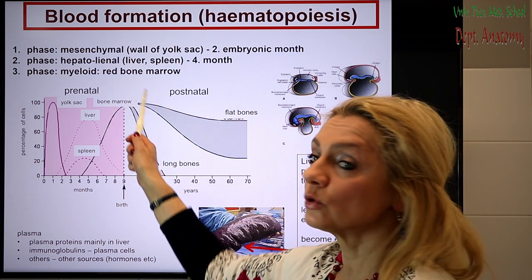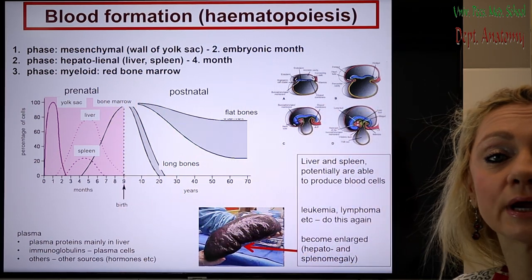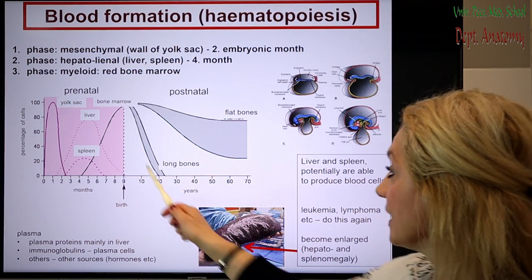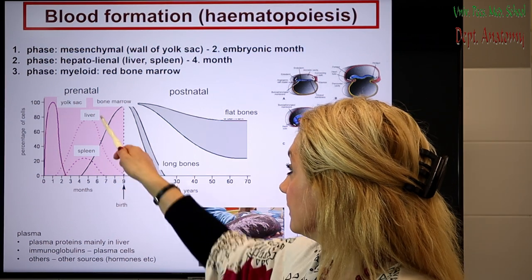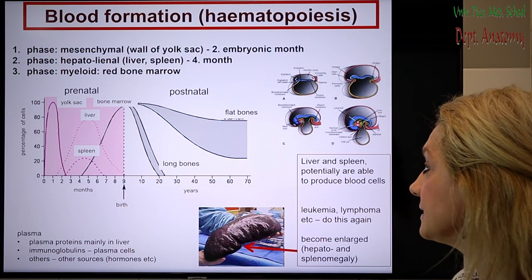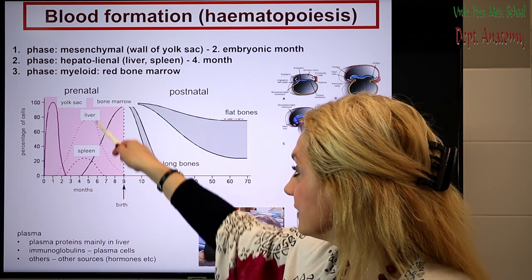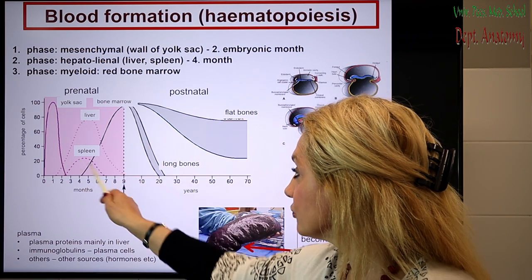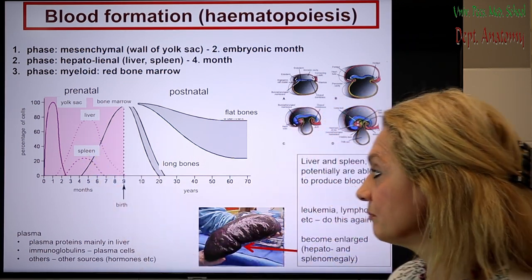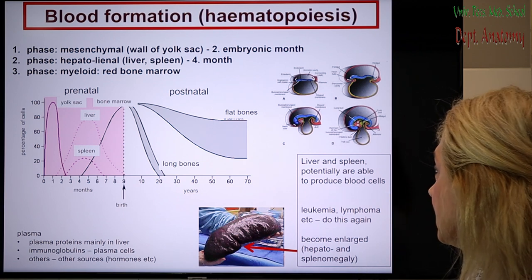This is called the hepatolienal blood formation or hepatolienal phase. The liver produces much more blood than the spleen, and this graph shows that these two organs are the main places for blood formation.